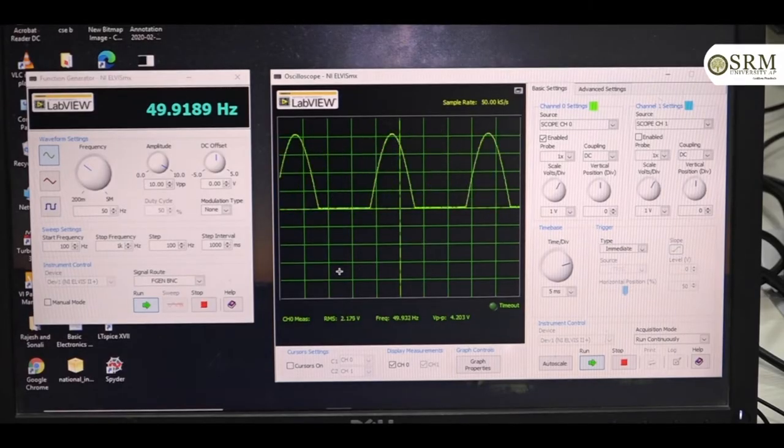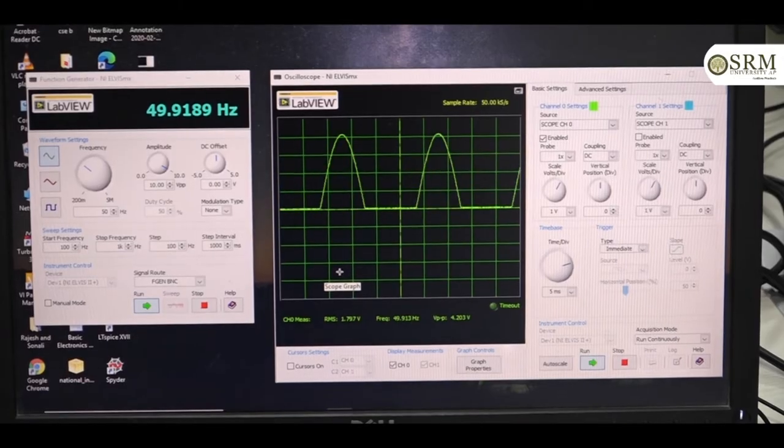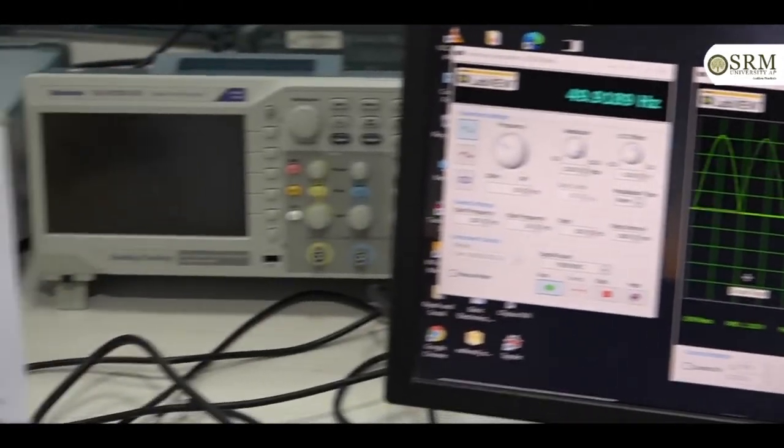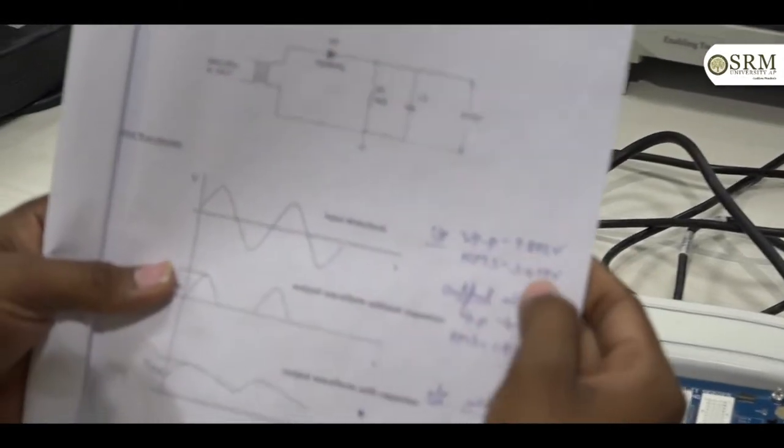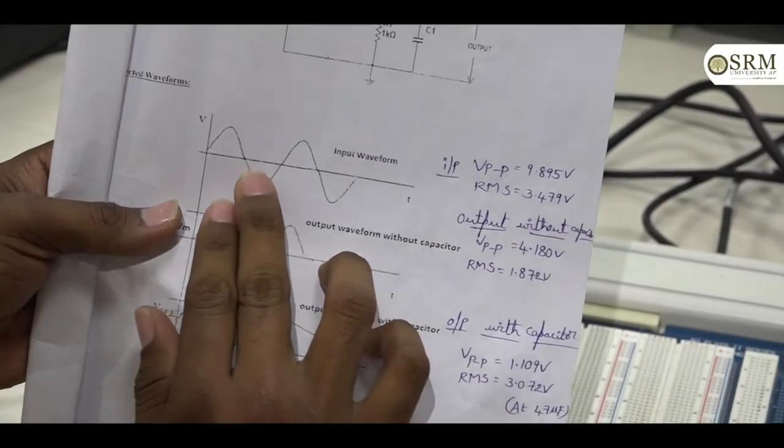Here, the half wave rectifier without capacitor we are using. Here, we are giving input sine signal. We can see this is also peak to peak voltage is 10 volts peak to peak voltage 50 Hz.